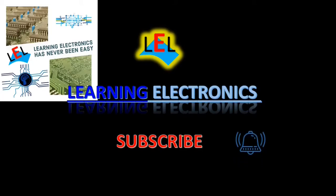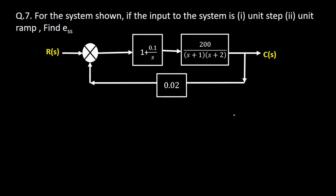Question number 7 on steady state error coefficients: for the system shown, if the input to the system is first a unit step and second a unit ramp, then we have to find out the steady state error ess for unit step as well as for unit ramp. A block diagram representation is given.